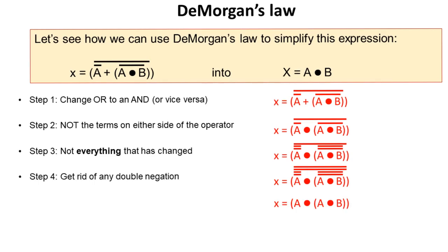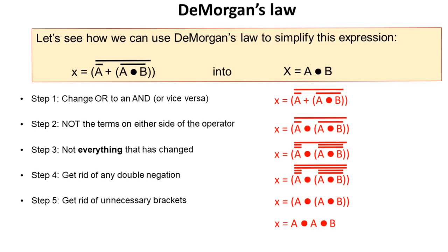Of course, we have loads of double negation. The entire expression is NOT NOTTED, so we can get rid of that. And the terms inside have been NOT NOTTED, so we can get rid of that. So you can see here, we've got rid of ALL of this NOTTING. The expression is already becoming much simpler. We can get rid of unnecessary brackets. And you can see now, we've ended up with A AND A AND B.